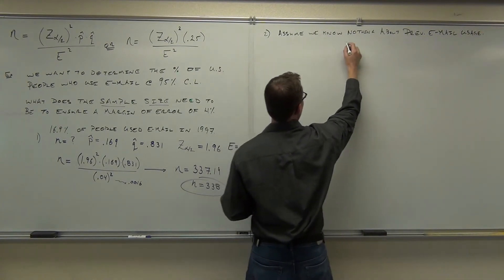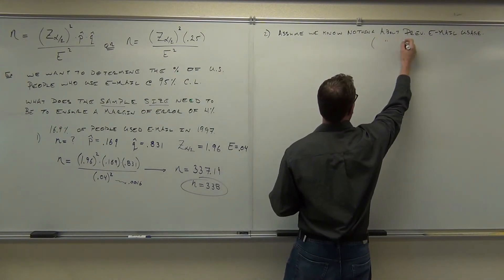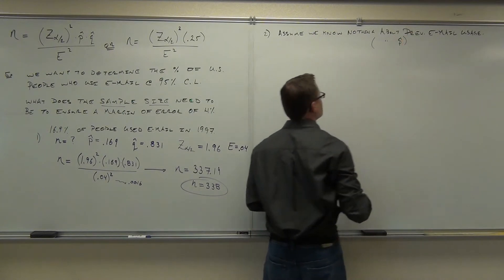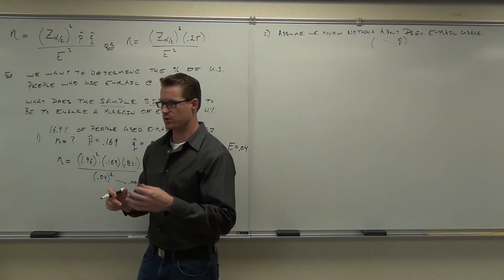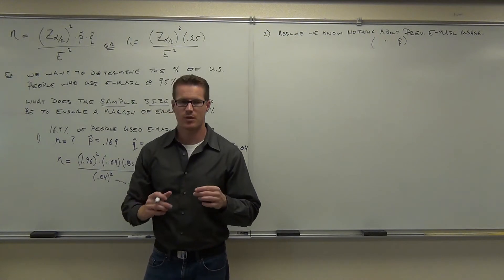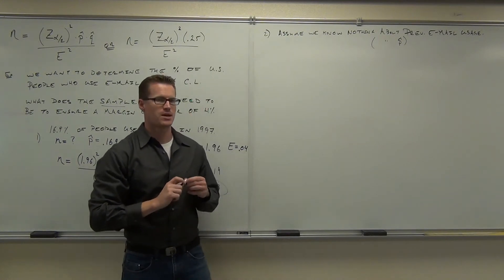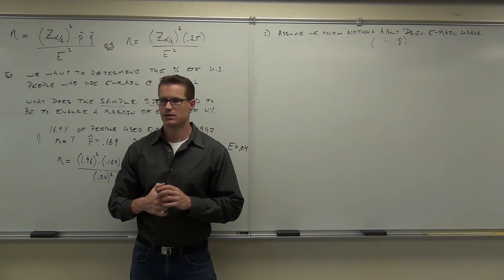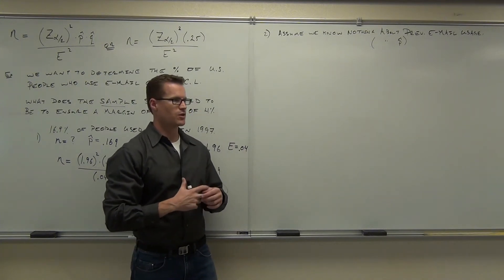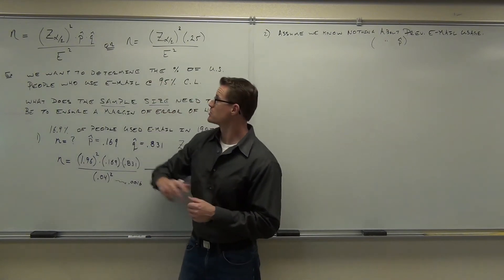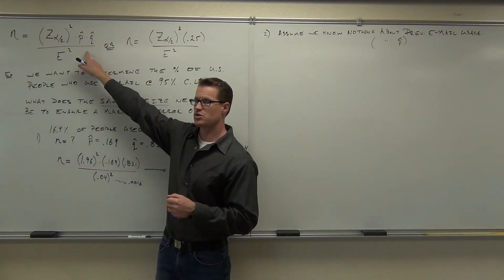In other words, we know nothing about p-hat because that would be the proportion of email usage. If you know nothing about p-hat, what do you know about q-hat? Nothing. You know neither because they're based on each other. So if you know nothing about p-hat, can you use this formula?